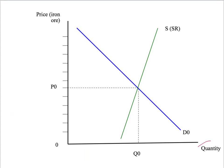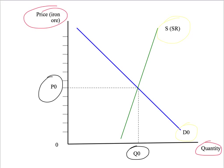On the horizontal axis we have quantity, and on the vertical axis we have price. We're going to start at our initial equilibrium around the beginning of 2004, the end of 2003. We have the original demand for iron ore and the short-run supply curve for iron ore. The initial price is given by P0, and the quantity of iron ore traded is given by Q0.